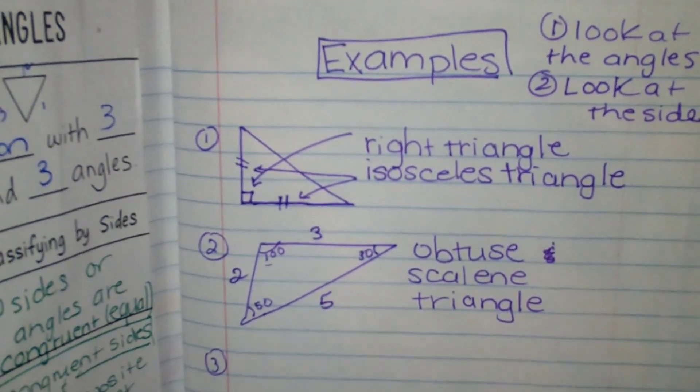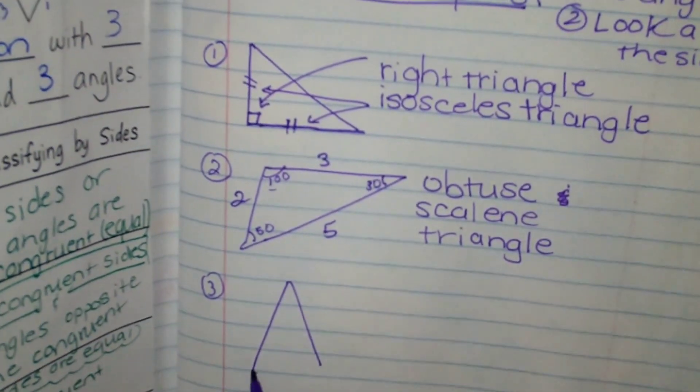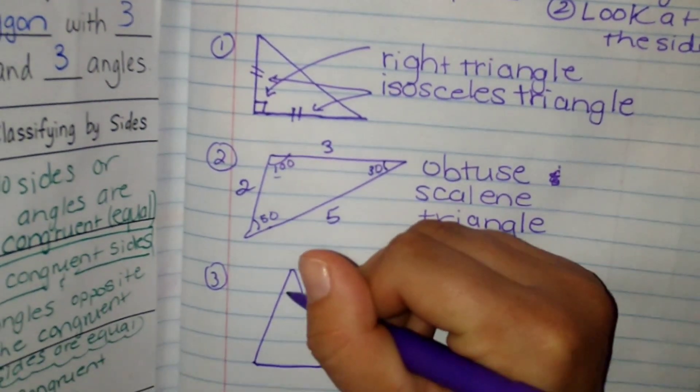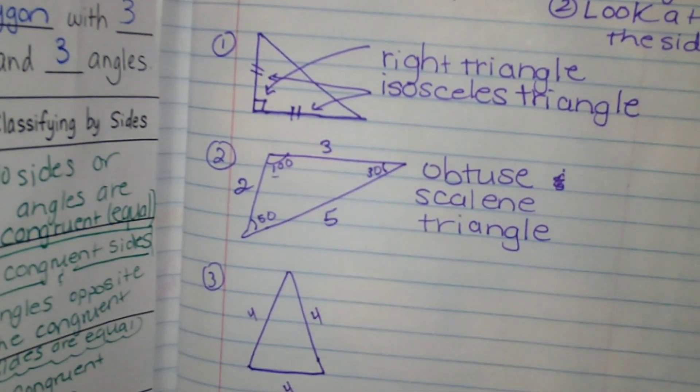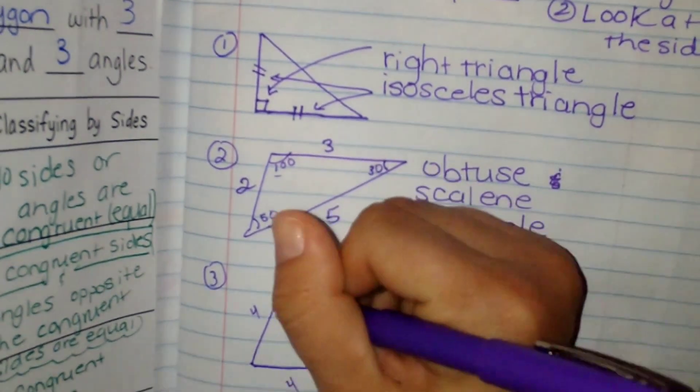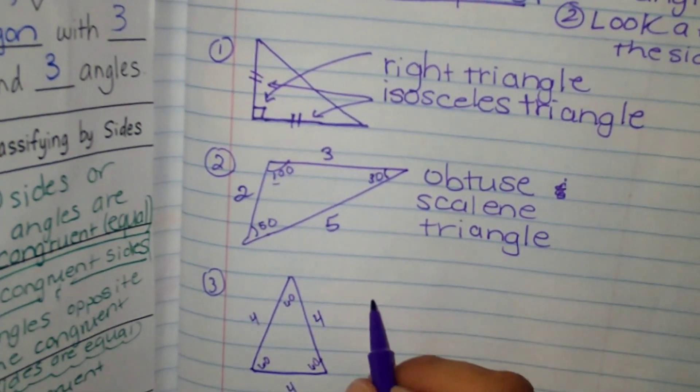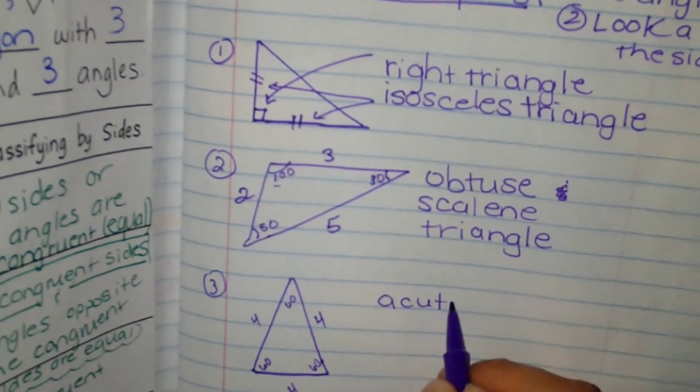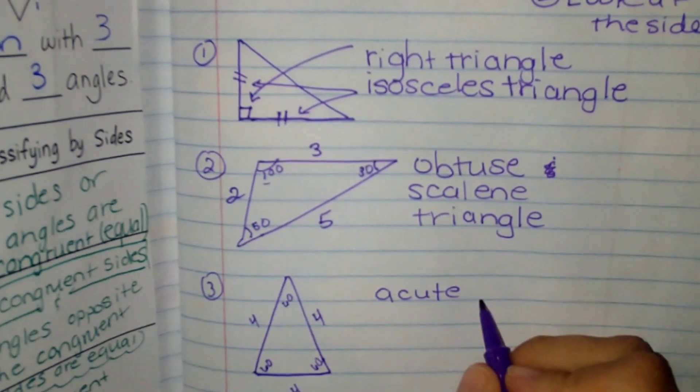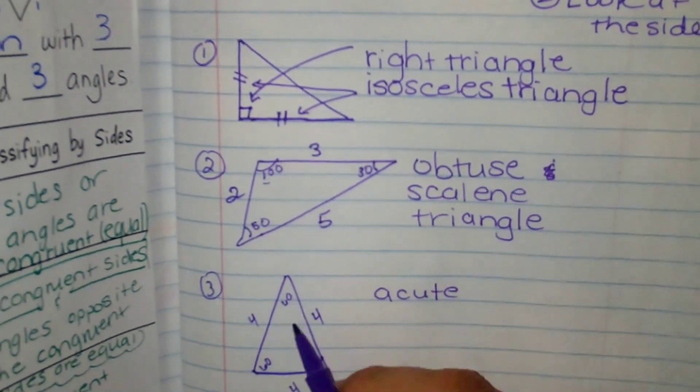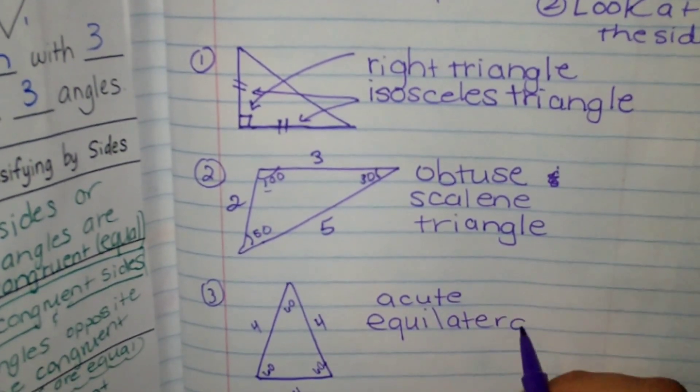Let's do one or two more. I have, I'm going to move up a little bit so we can see it. This one is four, four, and four. 60, 60, 60. That means it is acute because 60, 60, and 60 are all under 90 degrees. And that falls under the category of acute triangle. Then I look at the sides. All sides are equal or congruent. So that makes it an equilateral triangle.